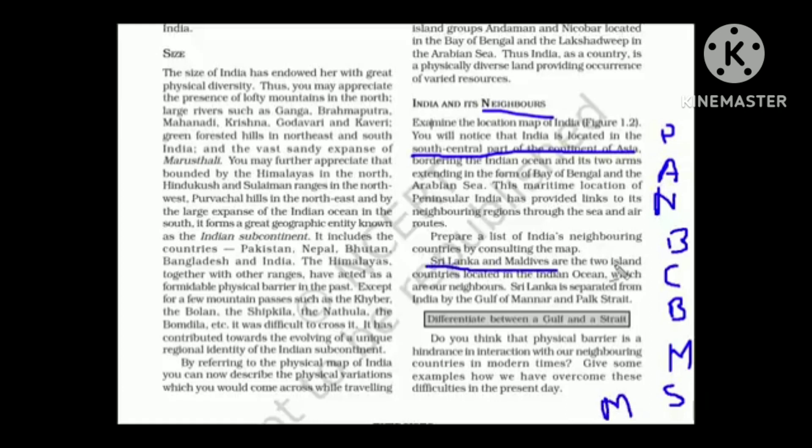Sri Lanka and Maldives are the two island countries located in Indian Ocean. Sri Lanka is separated from India by Gulf of Mannar and Palk Strait. If you look at the map, if this is India and here is Sri Lanka, in between them you have water. This region is Gulf of Mannar and Palk Strait. So with this, we have come to an end of chapter one.